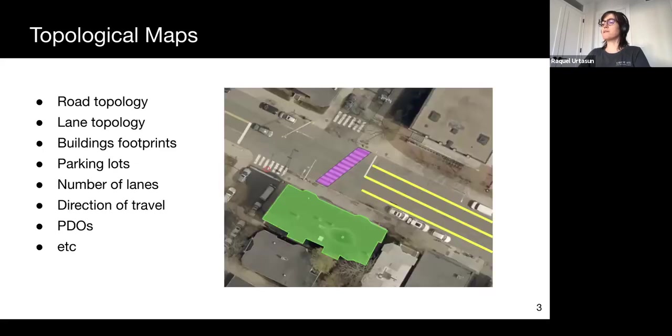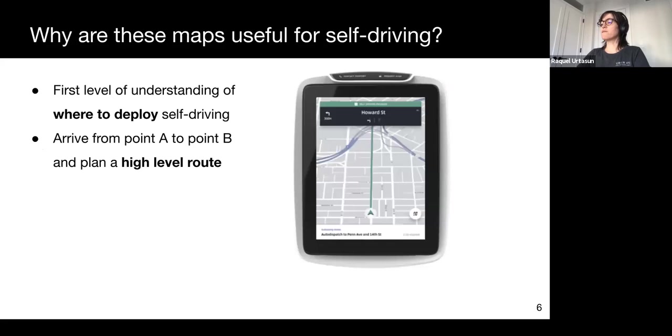Topological maps contain a diverse set of attributes such as the road topology, the number of lanes in a street segment, the location and shape of buildings, or the direction of travel. These topological maps are used by self-driving teams to understand the potential difficulty for a given geographical area. They are also used online by the self-driving vehicle to help plan a high level route to go from point A to point B.